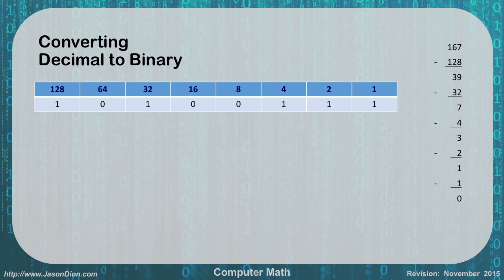So my answer would be 10100111, which equals 167. And that's the simple way to go from binary to decimal and decimal to binary.